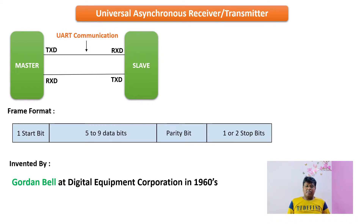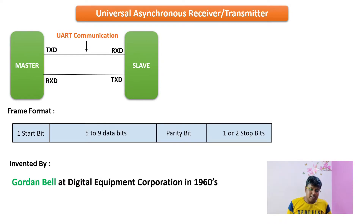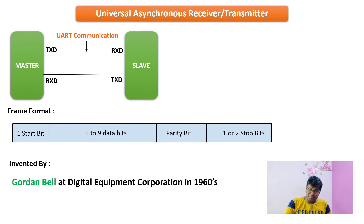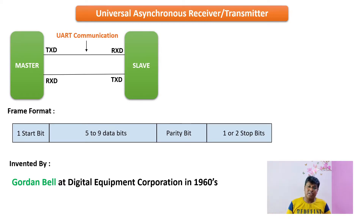UART was discovered by Gordon Bell at Digital Equipment Corporation in the 1960s. UART can transmit data up to 5 megabits per second between two devices. The baud rate is the number of symbols transferred per second, while the bit rate is the number of bits transferred per second. Since no clock is involved, this is asynchronous. There is also another mode called USART — Universal Synchronous Asynchronous Receiver Transmitter — which requires a clock interface.